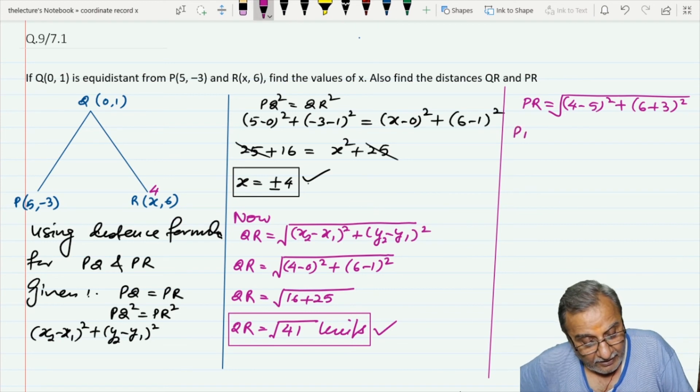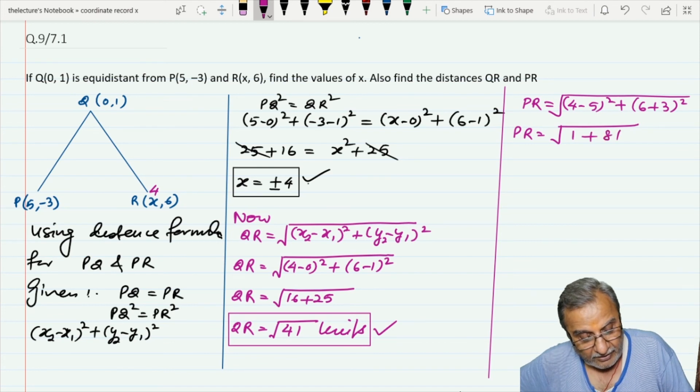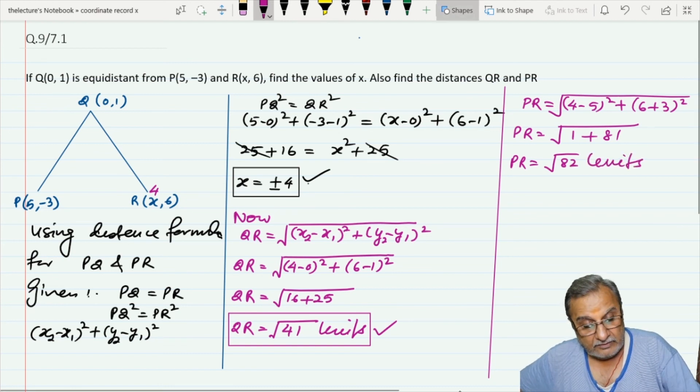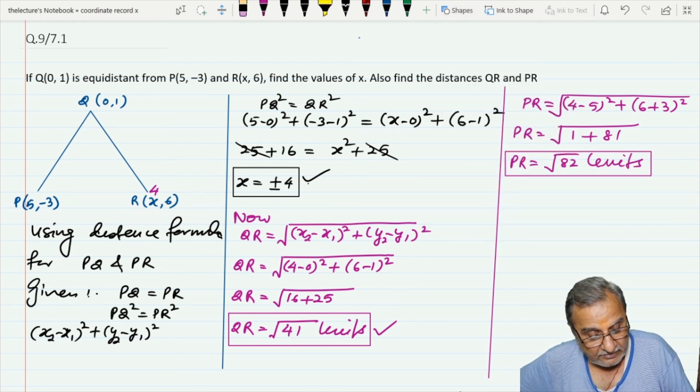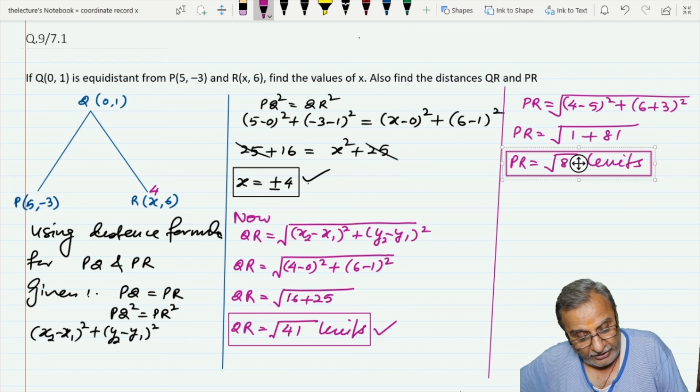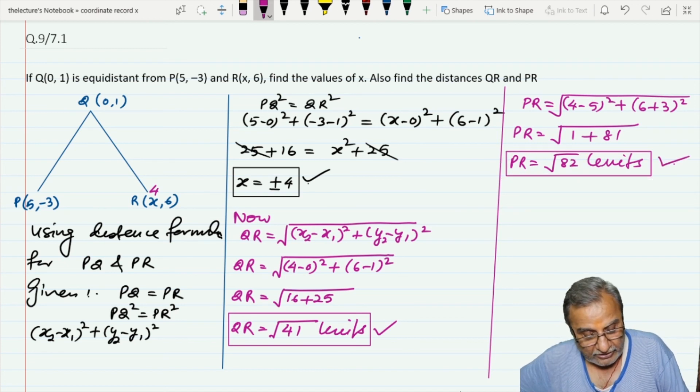So PR = √(1 + 81) = √82 units. The distance between P and R is √82 units.